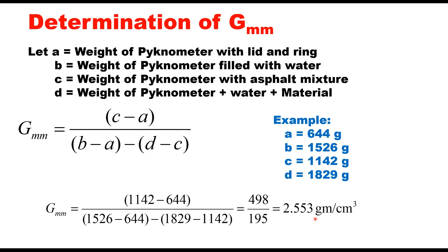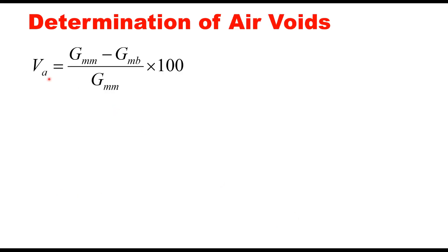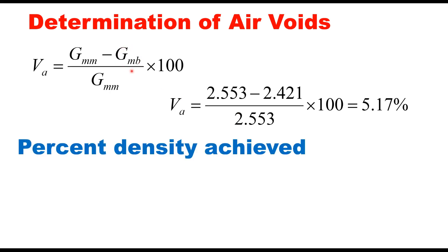This is the theoretical maximum density, and we estimated bulk density as 2.421. Therefore you can calculate air voids using this equation: GMM minus GMB upon GMM, that is 2.553 minus 2.421 upon 2.553, which equals 5.17 percent. This GMB can also be expressed as percentage density achieved, percent of theoretical density. That would be GMB upon GMM into 100.